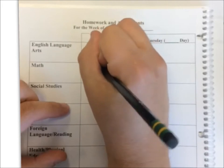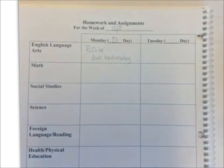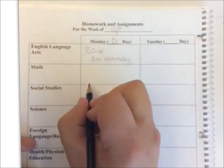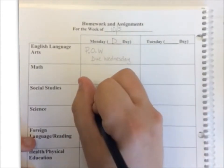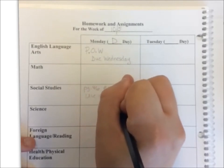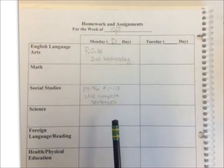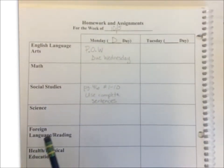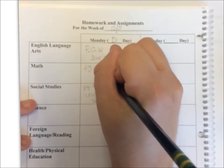Then you go to math, or maybe you go to social studies — you might not go in this order. In social studies class, at the end of class the teacher asks you to write down in your agenda the homework, which is in your packet, page forty-six, numbers one through ten, use complete sentences. Now in your head you know you need to remember to bring home that packet and your POW. For math, say that's page thirteen, numbers one through three.